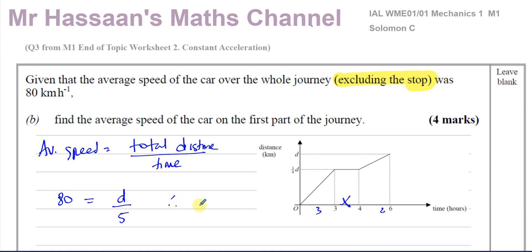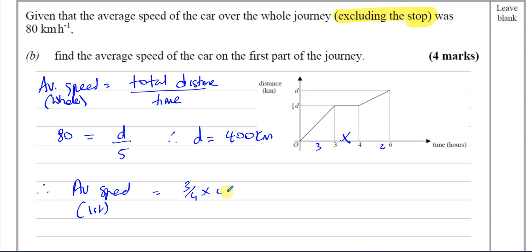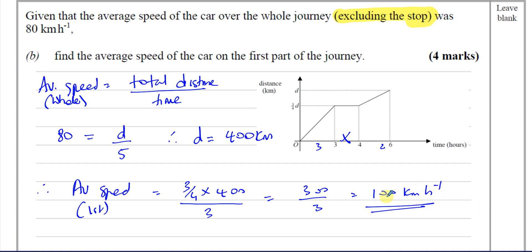Therefore the total distance is 400 kilometres. For the first part of the journey, the average speed is the total distance it travelled — which is three-quarters of d — so three-quarters times 400, divided by three hours. That gives you 300 over three, which is 100 kilometres per hour. And that's the answer for part b.